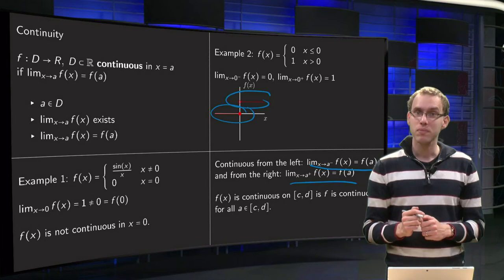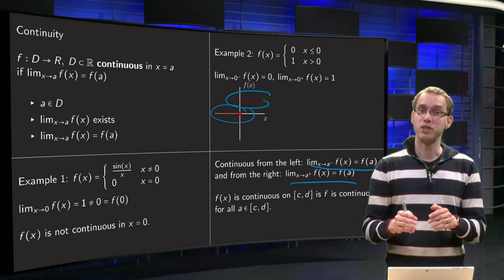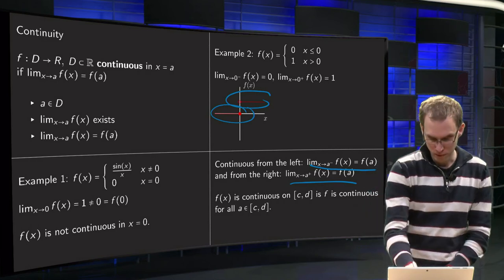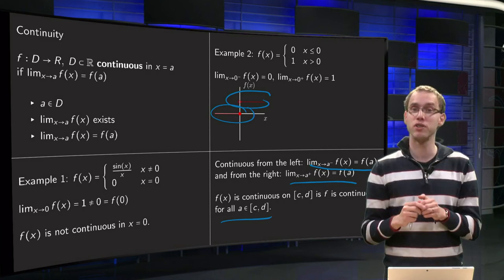And now, when do we say f is continuous on an interval? Well, the function f has to be continuous on all values inside the interval. For all a in interval [c,d], then f is said to be continuous on the interval [c,d].